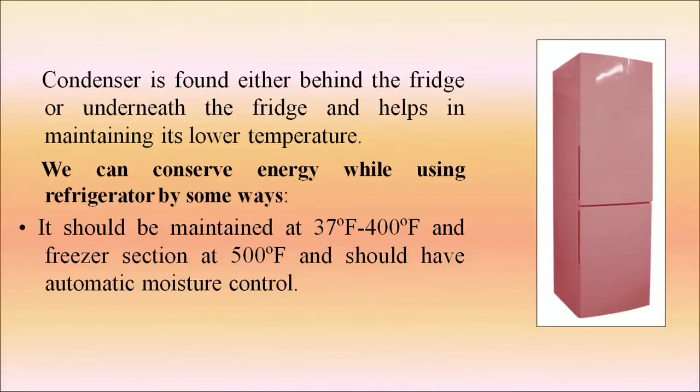Major appliances are the major consumers of energy, and improving the operating efficiency of household appliances will significantly reduce overall electricity consumption. For the refrigerator: the condenser, found either behind or underneath the fridge, helps maintain its lower temperature. The refrigerator should be maintained at 37°F to 40°F, and the freezer section at 5°F, and should have automatic moisture control.